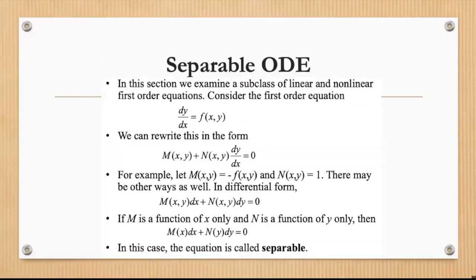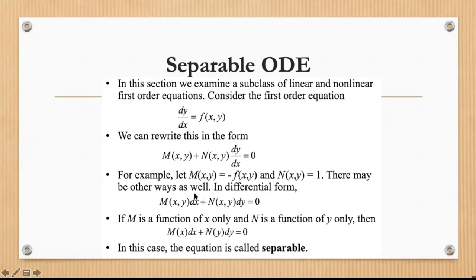Consider a first-order differential equation where dy over dx equals a function of x, y, or both. We can rewrite this into a format where M, a function of x and y, times dx, plus N, a function of x and y, times dy, equals zero. So in differential form, M is the coefficient of dx and N is the coefficient of dy.